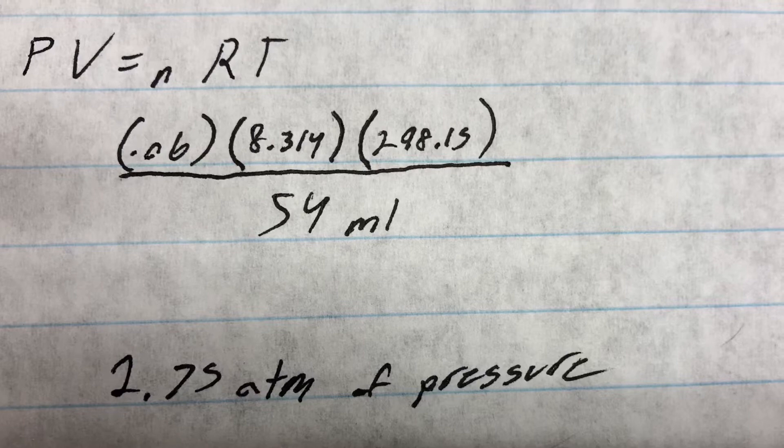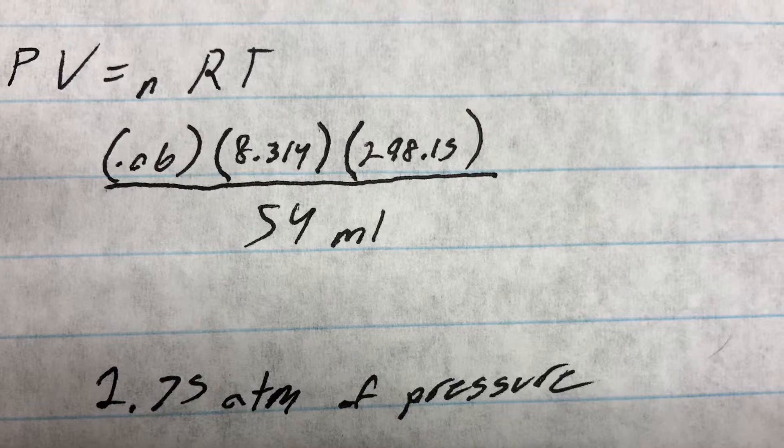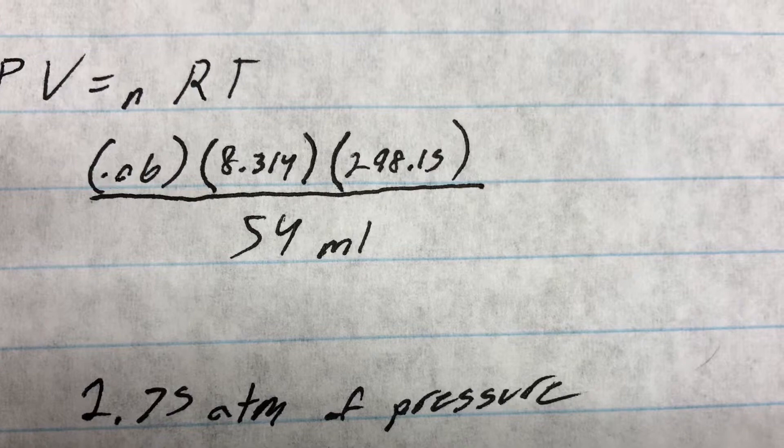The ideal gas law is PV equals NRT. P is pressure, V for volume, N for moles, R is constant, and T for temperature.